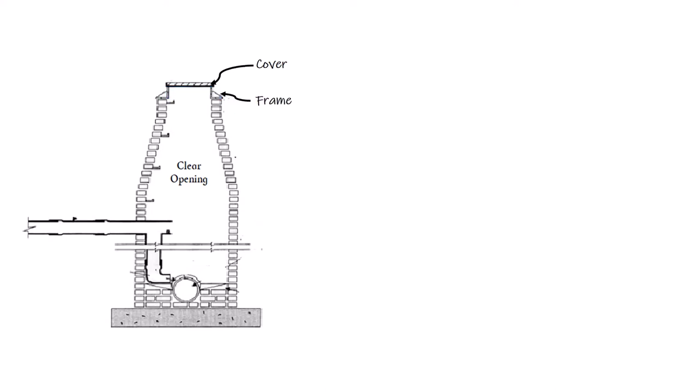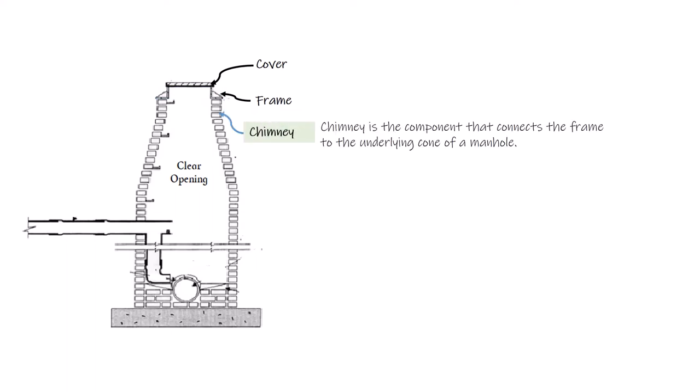Number three: the chimney of a manhole. The chimney is the component that connects the frame to the underlying cone of the manhole. It is made of brick, concrete, or polymer material.